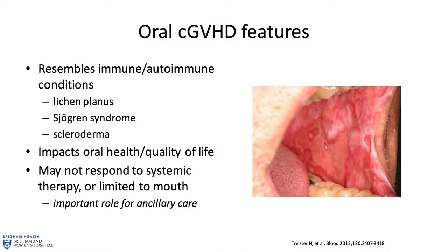In many cases, chronic graft-versus-host disease can be limited to just the mouth. Even if it's really bad, we try to avoid using systemic treatment initially if we think we can manage without it. This points to a really important role for what we call ancillary care, or types of topical or localized treatments that we provide as specialists.